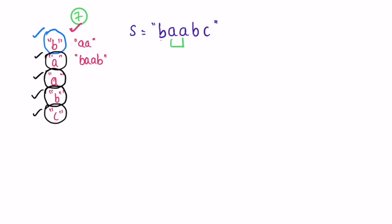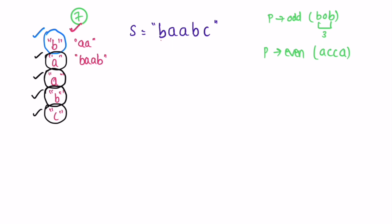A palindrome can be of odd length - which we already checked - for example "B, O, B" is a palindromic substring of odd length 3. But a palindrome can also be even length - for example "A, C, C, A" is an even-length substring with two middle elements. So we have to expand around these two middle elements as well. Along with expanding around single characters, we have to expand around pairs of characters. If that pair of characters is the same, then we can expand around that pair.